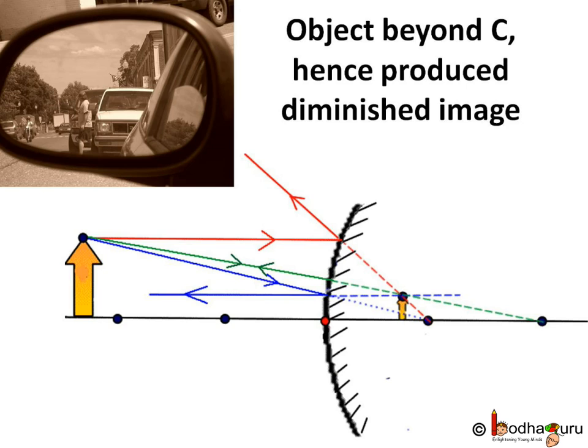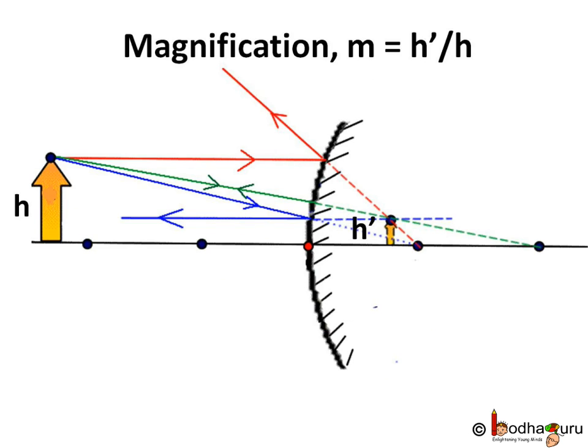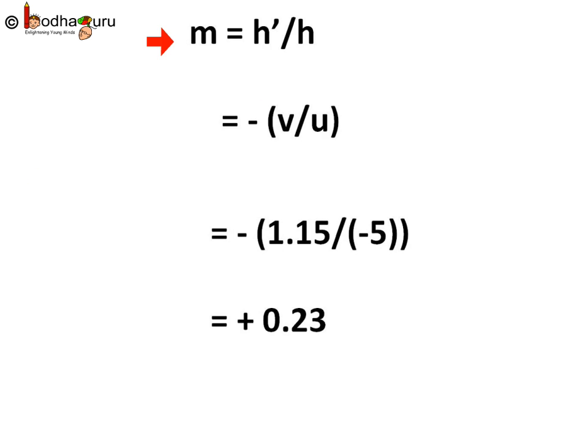How small is the image compared to the real object? As we have seen in the earlier lesson, the ratio of image height and object height is called magnification, denoted by letter M. So M = h'/h. And we have also seen M = h'/h = -v/u.